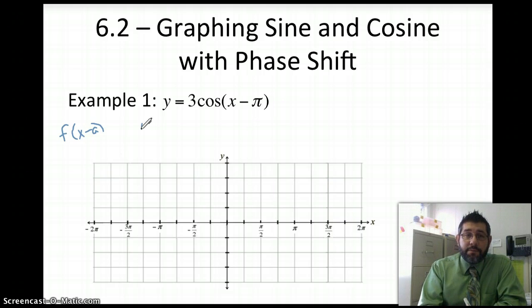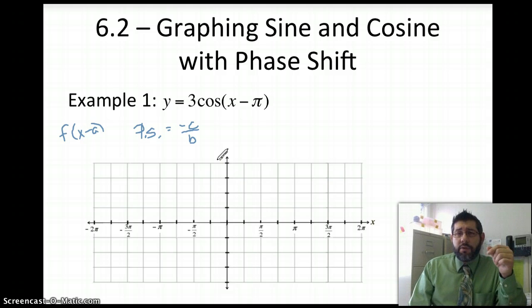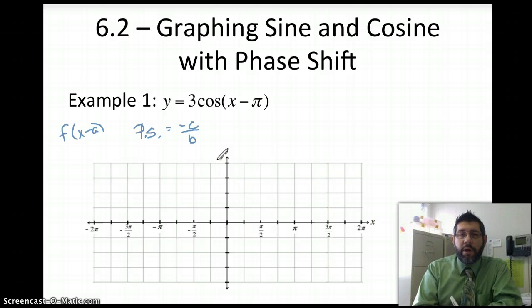The phase shift can be found by using the formula negative C over B. Now, some books use C over B, some use negative C over B, but it really just depends on making sure you understand if it goes left or right. It really doesn't matter if you use negative or positive. Just make sure you know which direction you're going in.